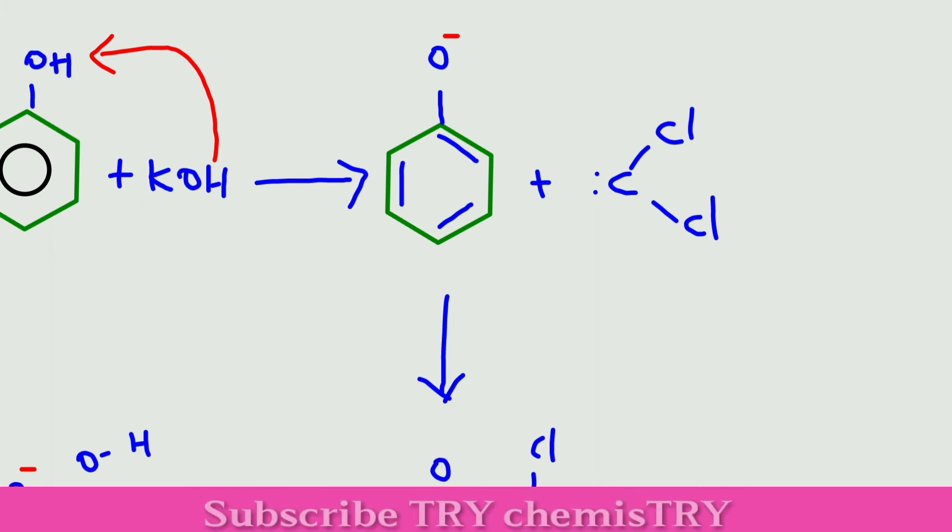In the ortho position, when the phenolate ion donates the electron to the phenyl group, this double bond becomes a single bond. And at the ortho position carbon, the carbon dichloride attaches.